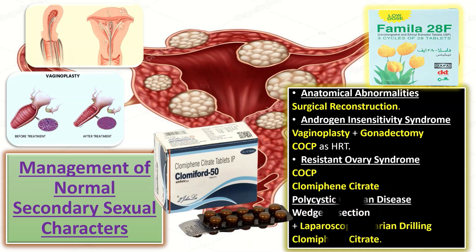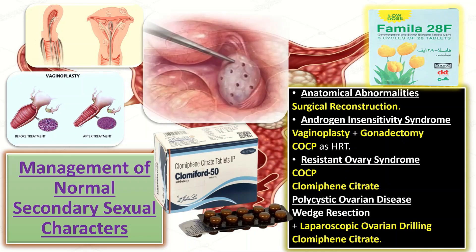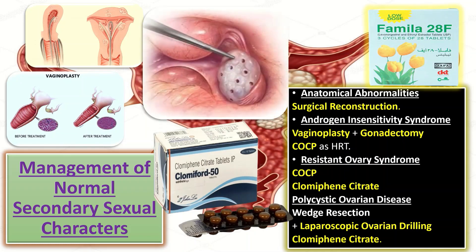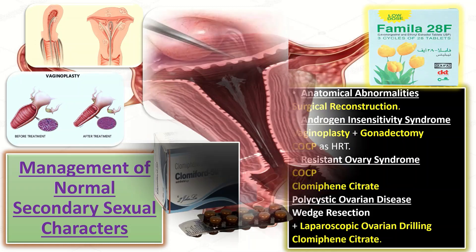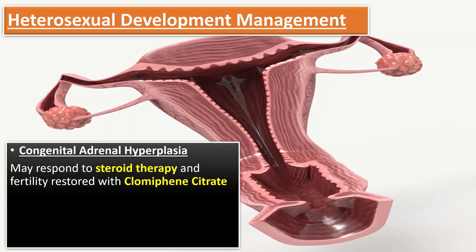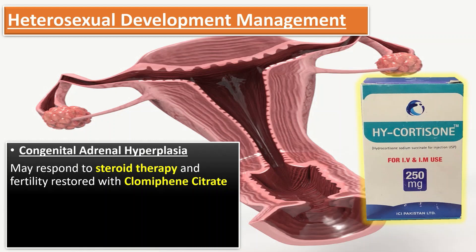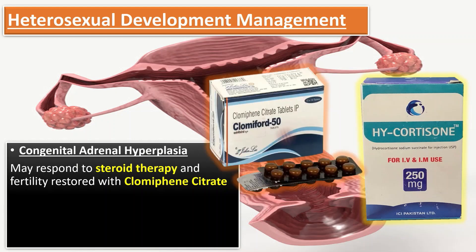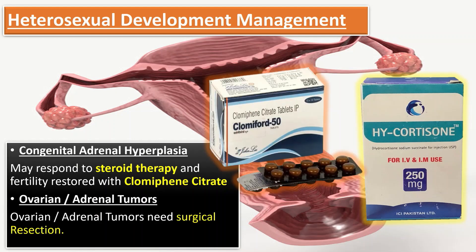For polycystic ovarian disease, wedge resection plus laparoscopic ovarian drilling is performed followed by ovulation induction with clomiphene citrate. For heterosexual development cases such as congenital adrenal hyperplasia, steroid therapy is given and fertility is restored with clomiphene citrate. Ovarian and adrenal tumors require surgical resection.